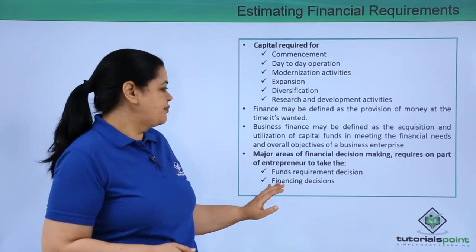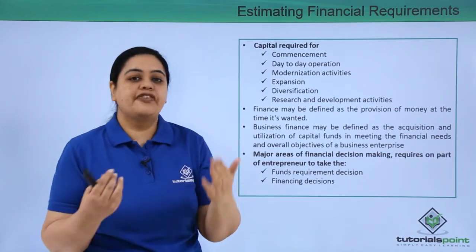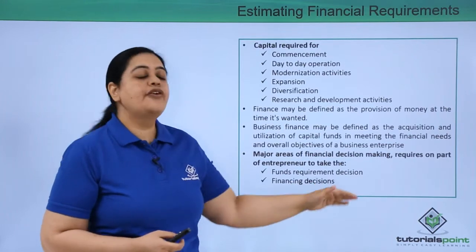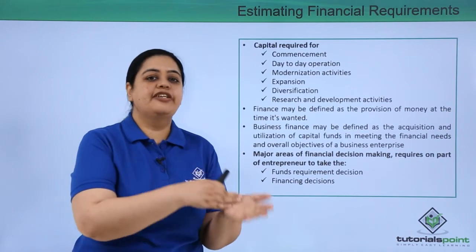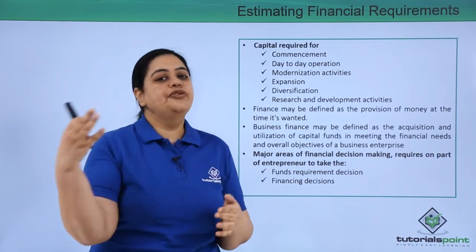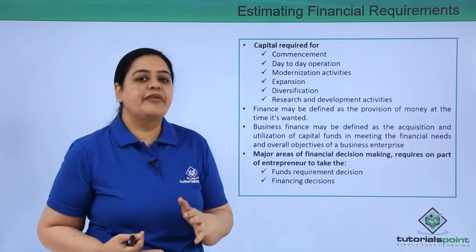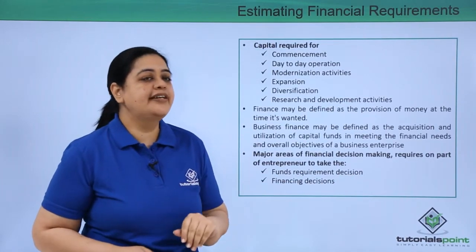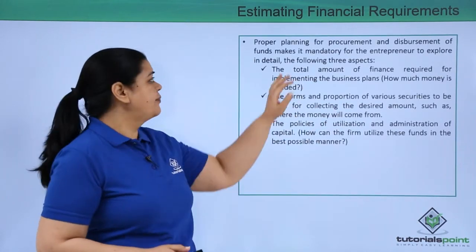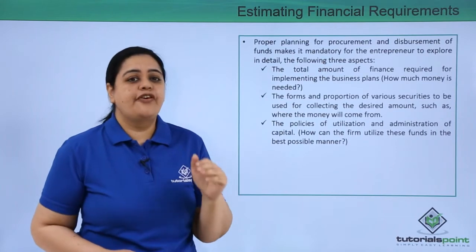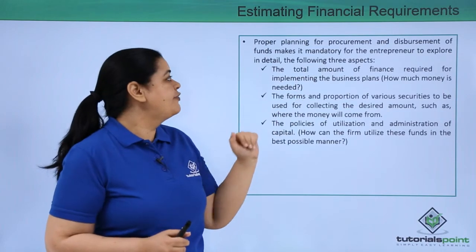The major areas of financial decision making require an entrepreneur to take decisions on the funds required, and on financing decisions — what kind of finance to take. Should it be equity, or should you go for a loan, that is debt? You also need to make a decision on what kind of funds are required. This is necessary because proper planning for procuring and disbursement of funds makes it mandatory for the entrepreneur to explore three aspects.